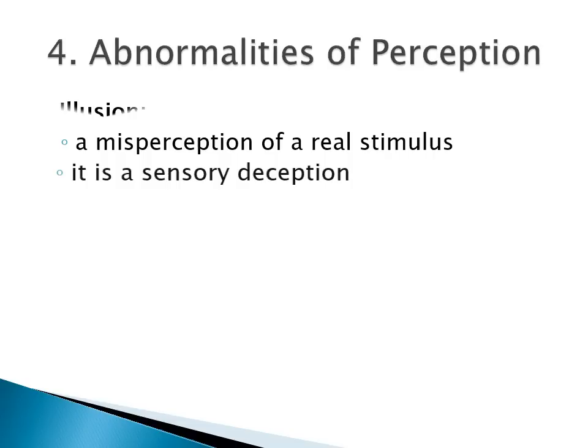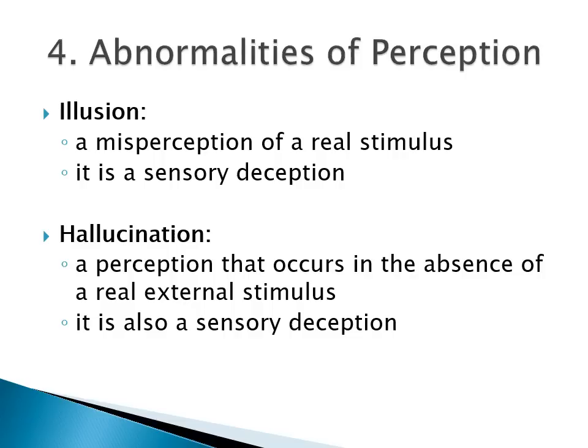We now move on to abnormalities of perception. An illusion is a misperception of a real stimulus — it is a sensory deception. A hallucination is also a sensory deception, but in a hallucination, a perception occurs in the absence of a real external stimulus. A typical example of an illusion would be mistaking a rope lying on the floor in poor lighting and thinking that it is a snake.